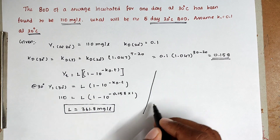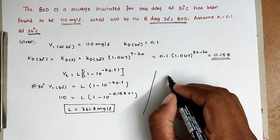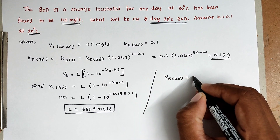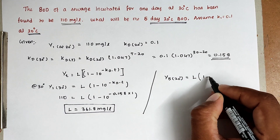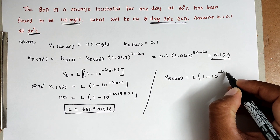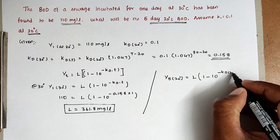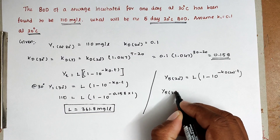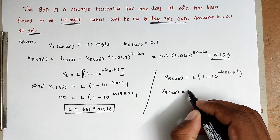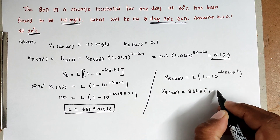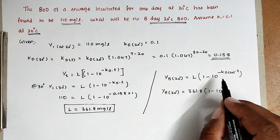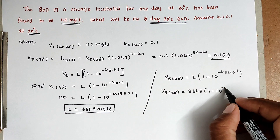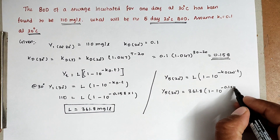Since it is the same sample, the ultimate BOD is the same in both cases. Now we find the 5-day BOD at 20 degree Celsius using the same formula: Y_5_20 = L × (1 − 10^(−KD_20 × T)). Substituting L = 361.8, KD at 20 degree Celsius = 0.1, and T = 5 days.